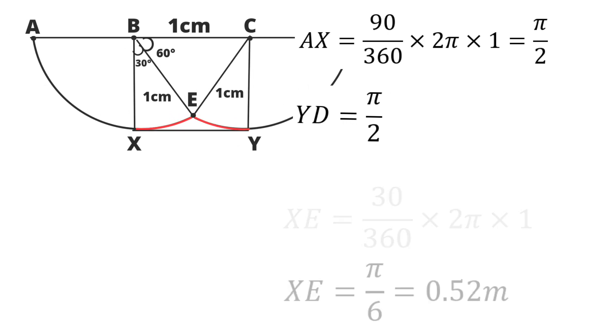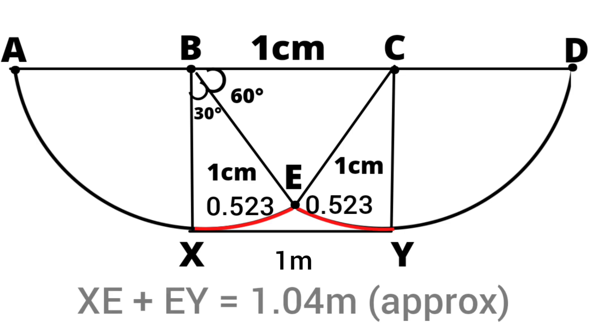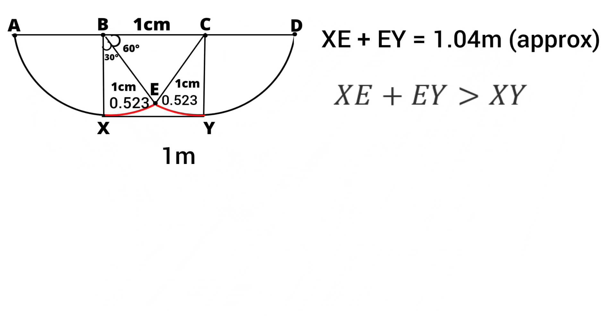Similarly, the length of EY is also going to be 0.523. Therefore, XE plus EY is equal to 1.04 meters which is greater than the length of XY. So, ant must travel through XY to reach that sugar particle with the minimum distance.